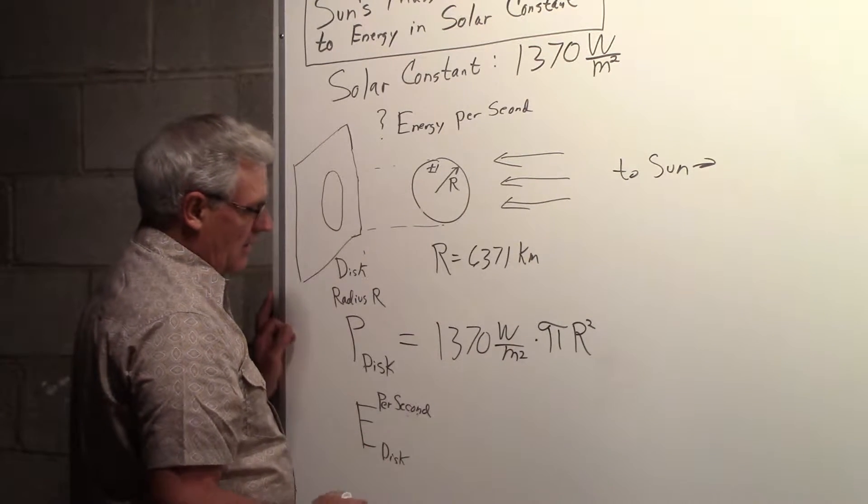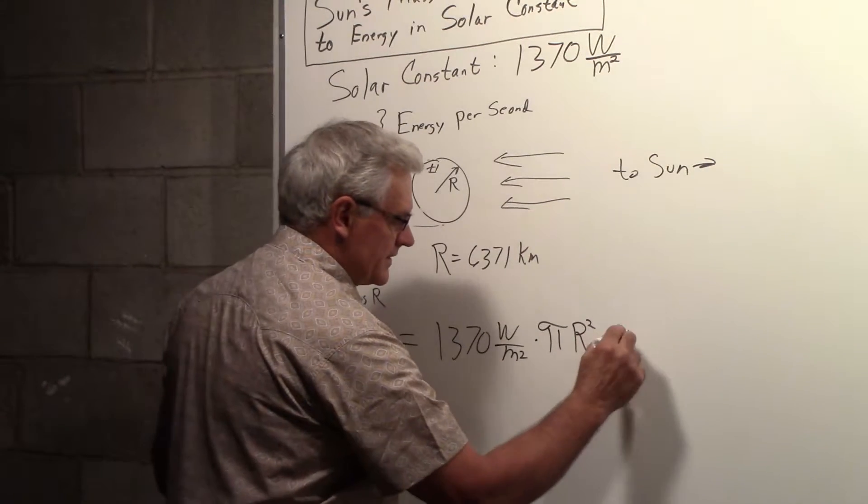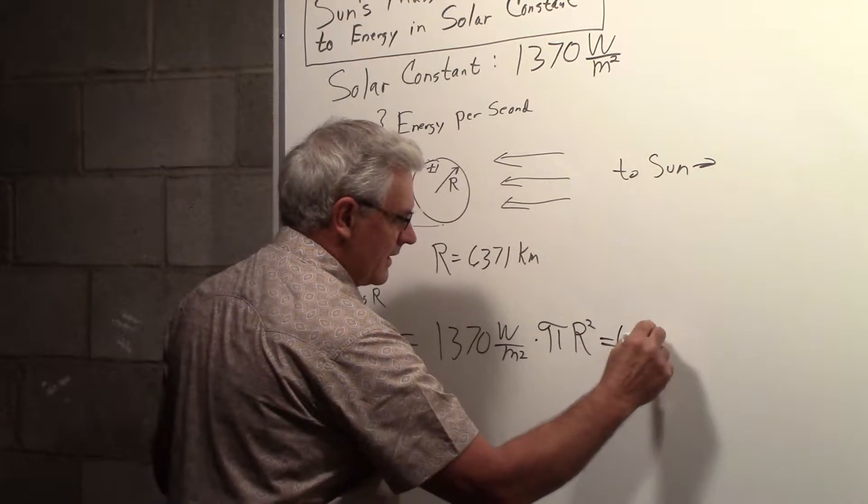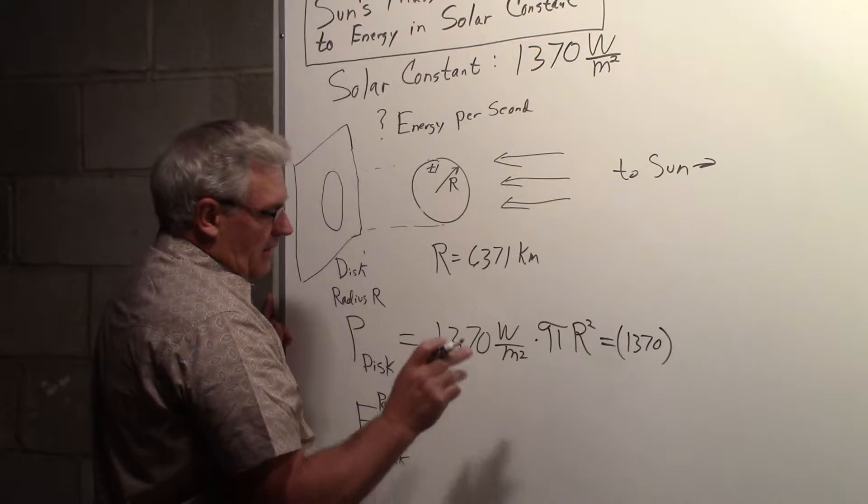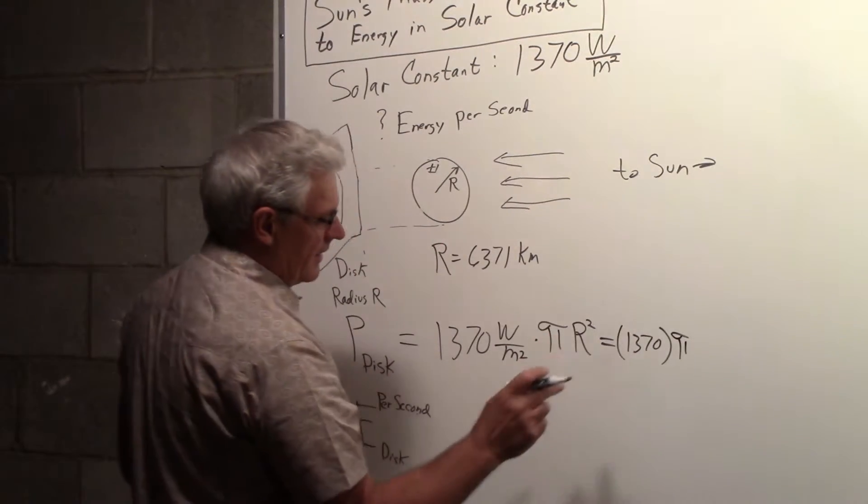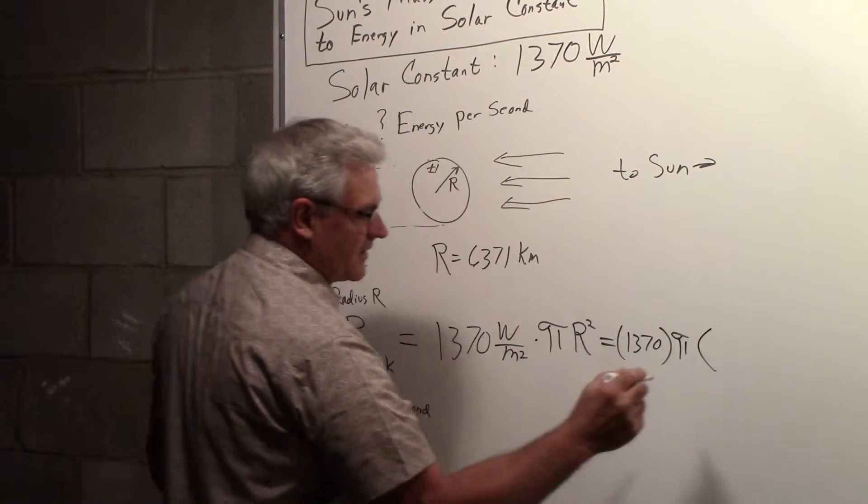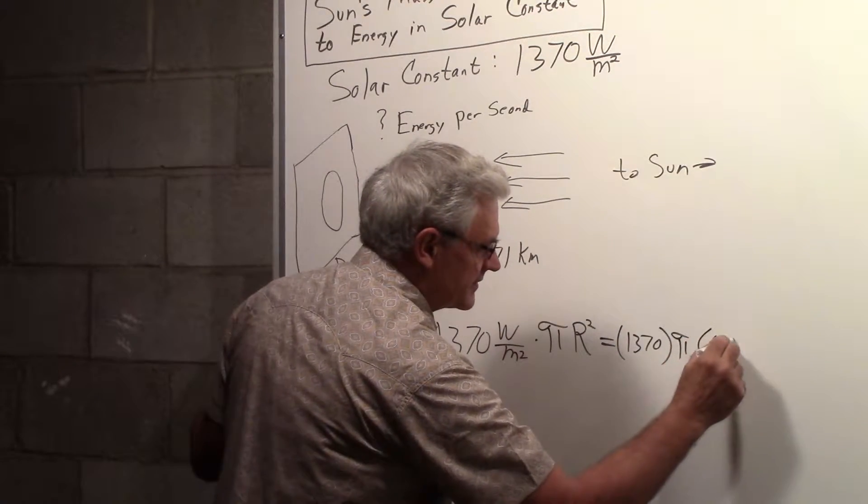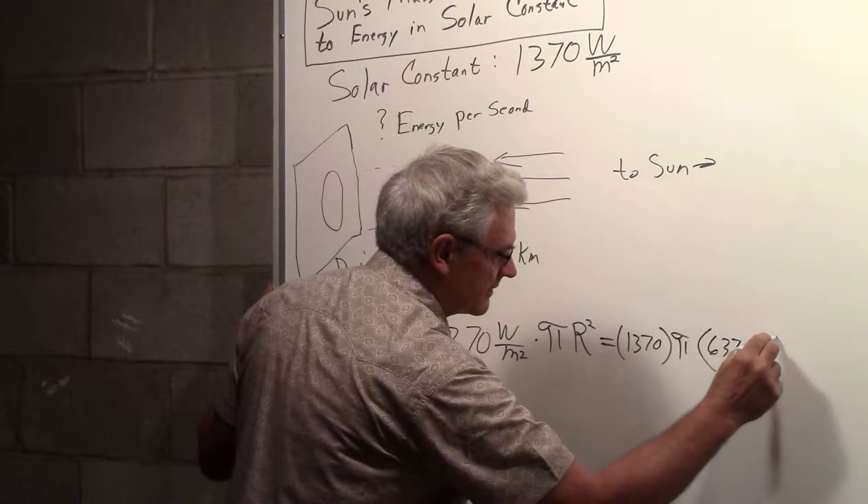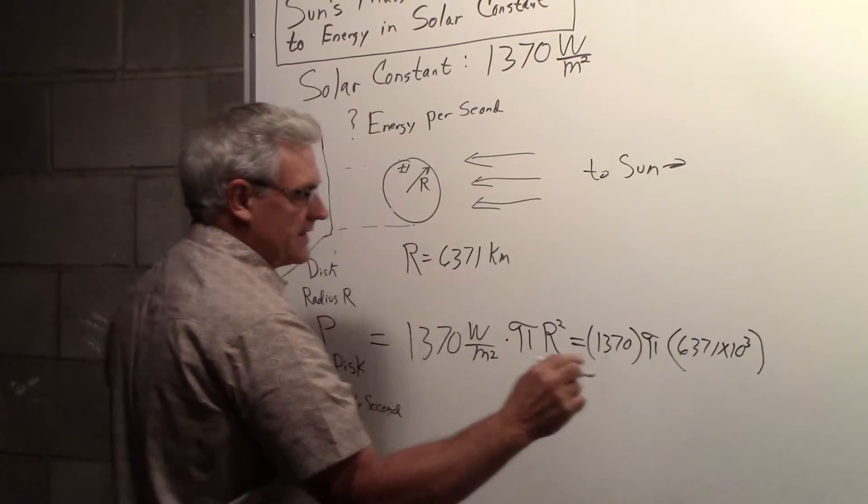And that would then become the 1370 with a pi. And the radius squared, we'll write this in terms of meters, so it would be 6,371 times 10 to the 3 meters. That's squared.